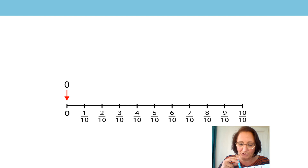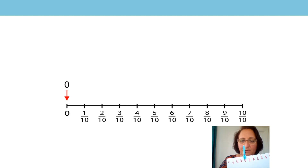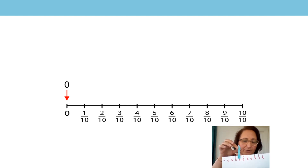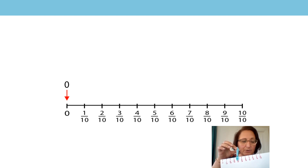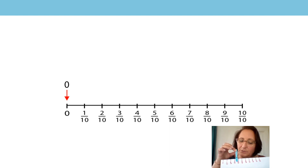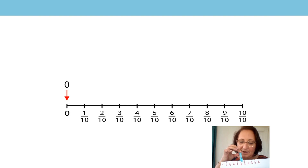If it was to carry on, can you predict where eight tenths would be? Would that be a large part of the whole or a small part of the whole? That's right — it would be a large part of the whole because it would be almost to the end, almost to one whole. So we're going to carry on counting: four tenths, five tenths, six tenths, seven tenths, eight tenths.